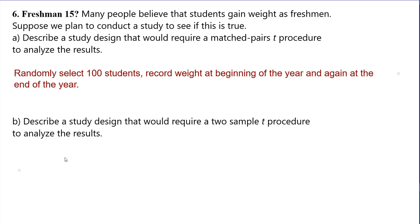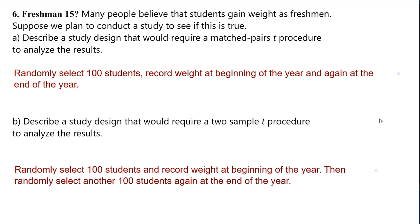For a two-sample T procedure, the groups are independent and not paired. That would be taking 100 freshmen and 100 sophomores from different classes — not related to each other — and comparing their weights right now without waiting a year. But you'll have a lot more variability. If you sample one 350-pound lineman as a freshman, that could throw everything off — you could see freshmen appearing heavier than sophomores just because of that one outlier. Randomly select 100 students at the beginning of the year, then randomly select another 100 at the end; because they're not the same person, they're not related and can't be paired.